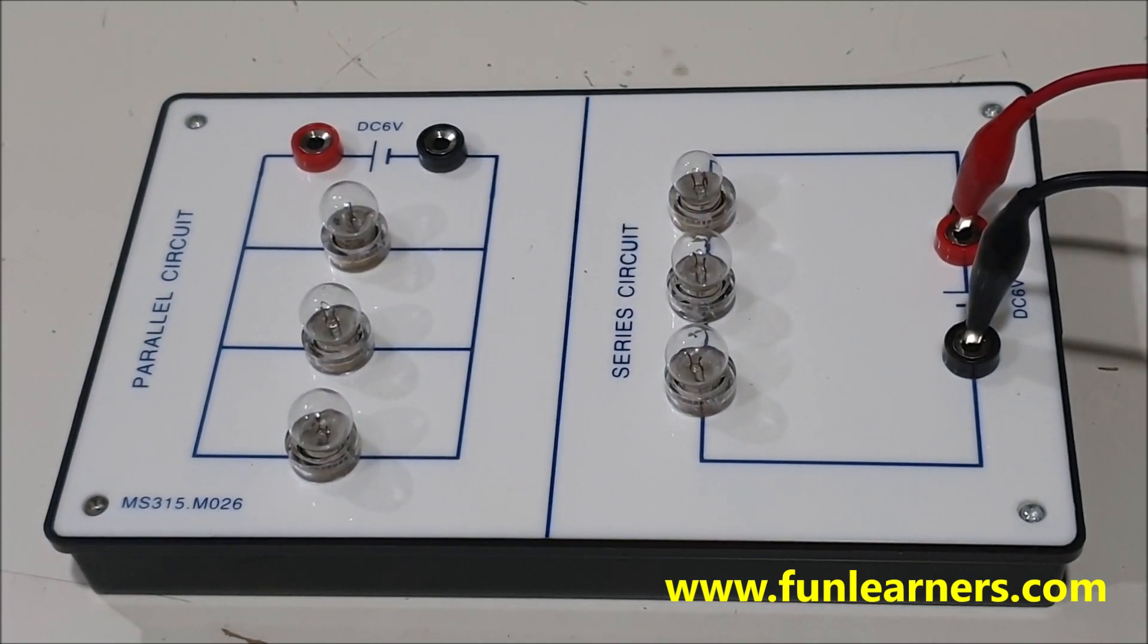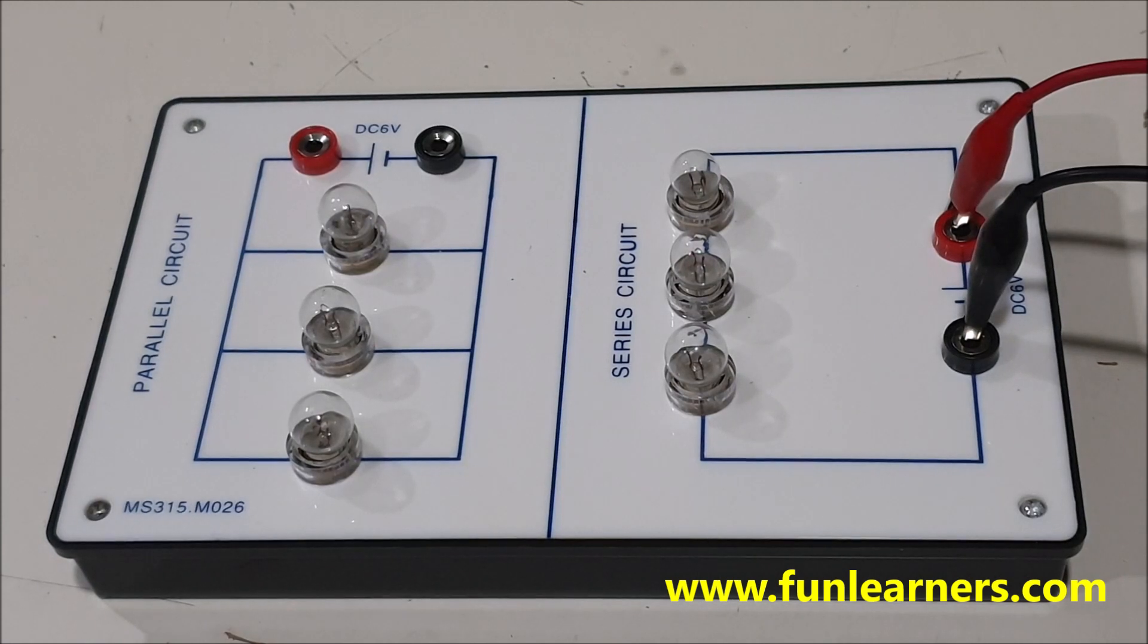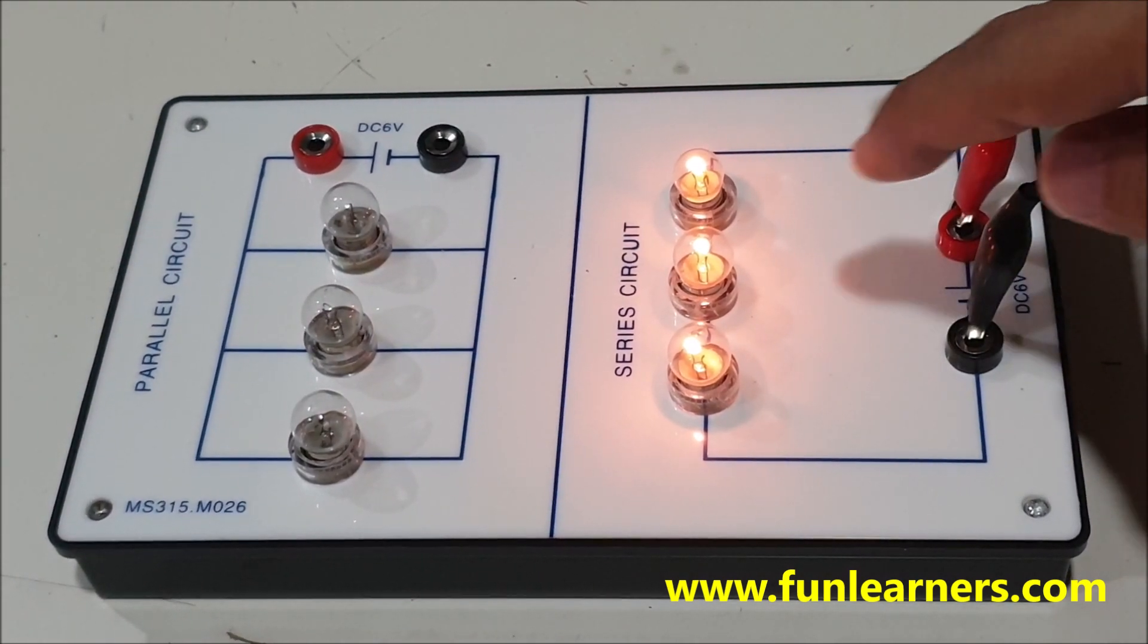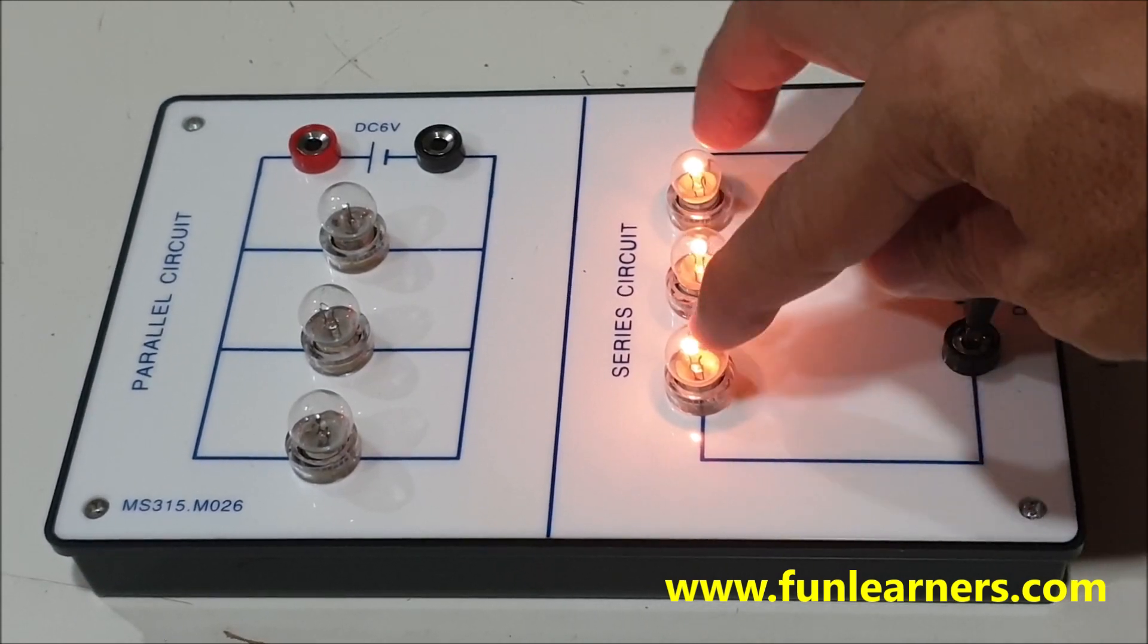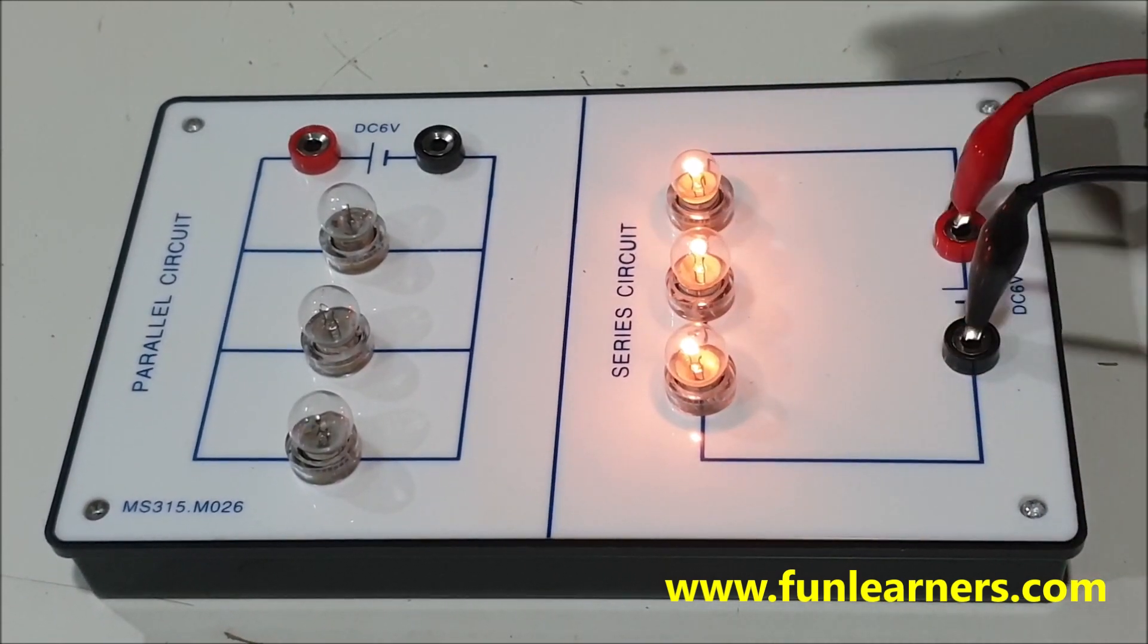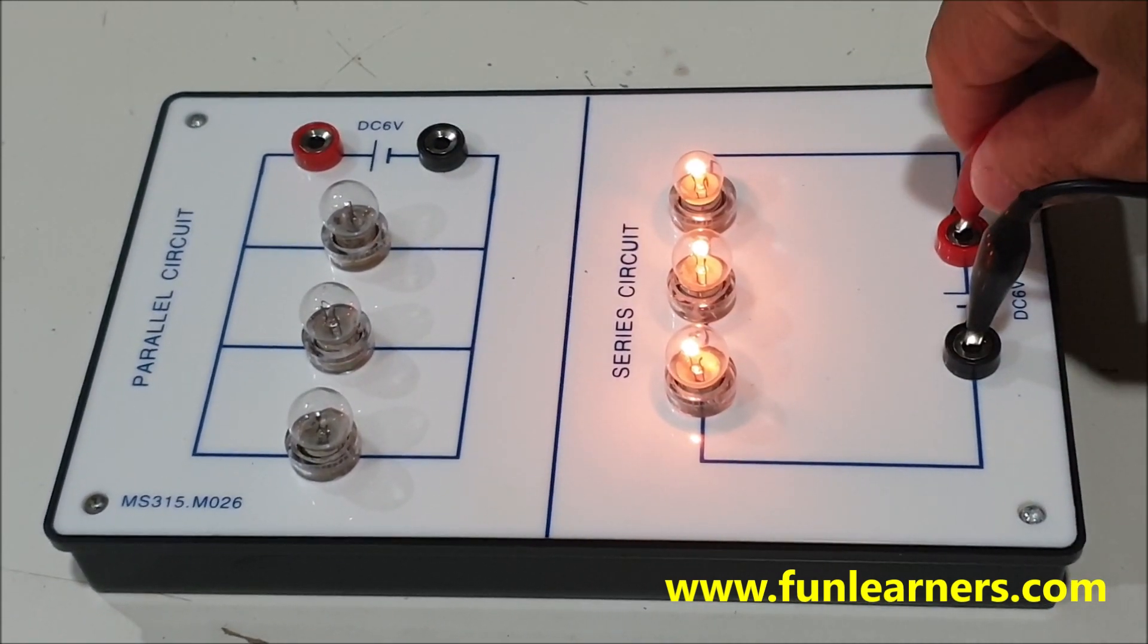What's the effect of these two different circuits? Let's switch on the current. For a series circuit, the current will flow through these three light bulbs. These three light bulbs are not as bright, but when you connect them